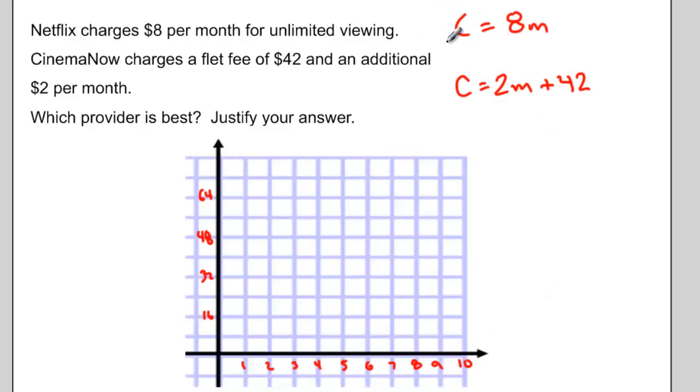Did you get an equation for Netflix that is similar to C = 8m? And for CinemaNow, an equation like C = 2m + 42?